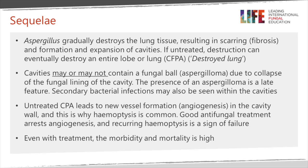It's quite common, because cavities are usually in communication with the bronchial tree, to get secondary bacterial infection. One slightly unusual feature of chronic pulmonary aspergillosis is the angioneogenesis, probably due to hypoxia in the tissues around the fungus. This causes new vessels arising from both the systemic circulation — typically branches of the subclavian artery — and from the bronchial arteries. These blood vessels are at systemic pressure, and if haemoptysis occurs it can be very serious. The morbidity and mortality remain high even with treatment, and clearly higher still without it.